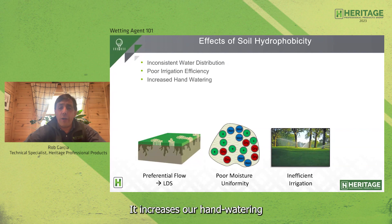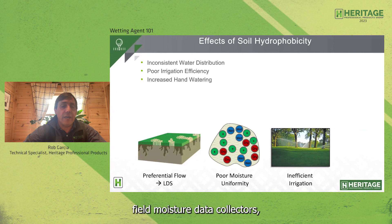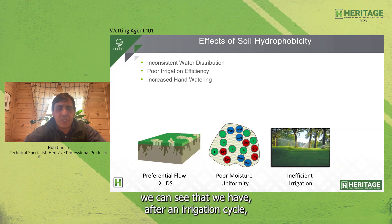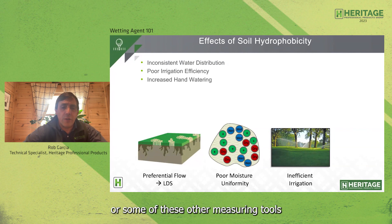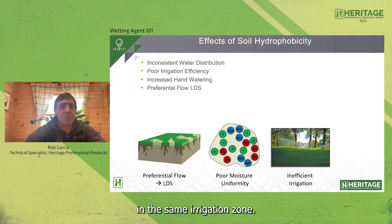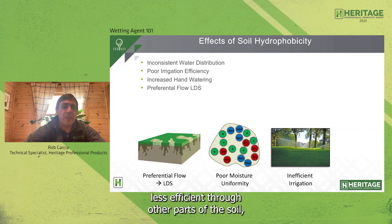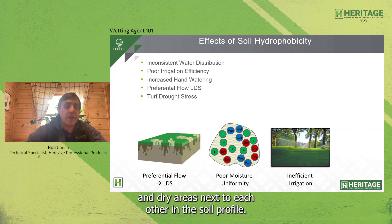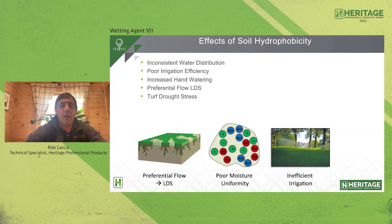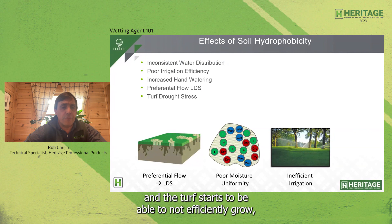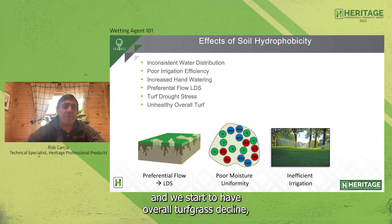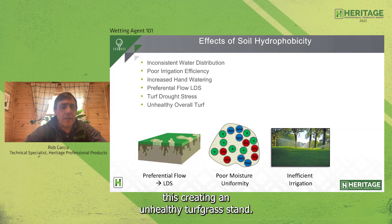Poor irrigation uniformity increases hand watering to try to achieve some level of soil uniformity. Using field moisture data collectors like a POGO, we can see after an irrigation cycle that we have very wet areas and very dry areas in the same irrigation zone. This creates preferential flow — essentially localized dry spot — where water moves more efficiently through certain parts of the soil and less efficiently through others, creating wet and dry areas next to each other. After that, we start to have turf drought stress, and the turf starts to not efficiently grow, leading to overall turf grass decline and an unhealthy turf grass stand.